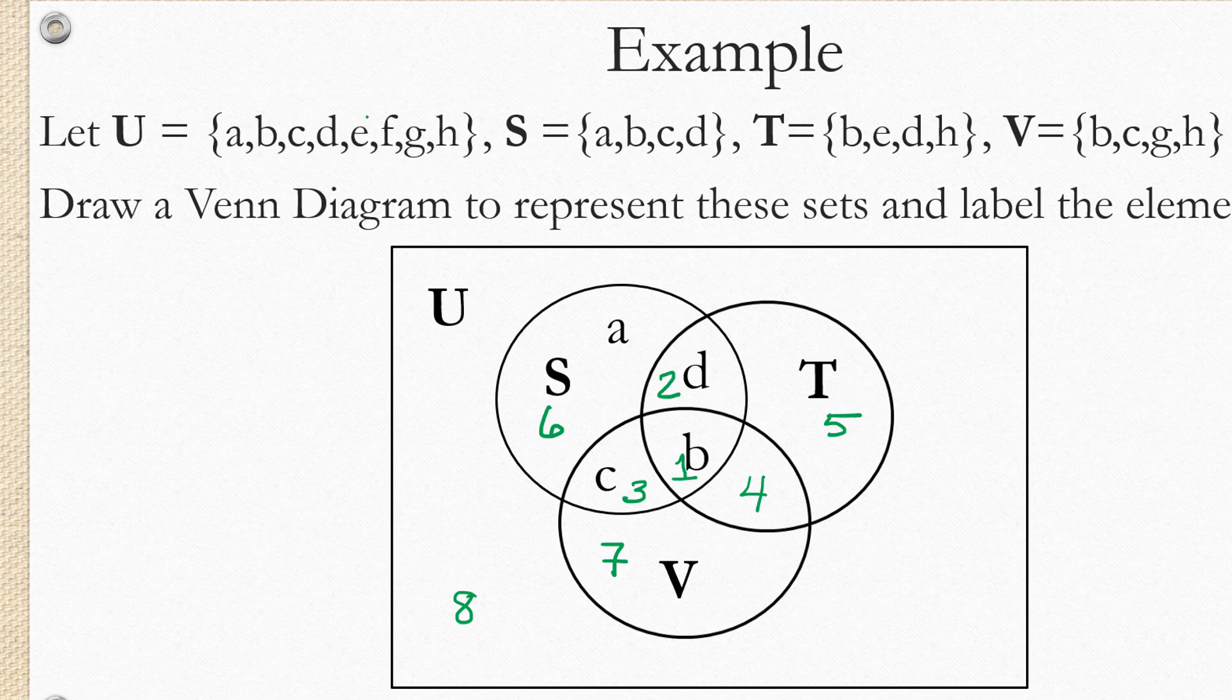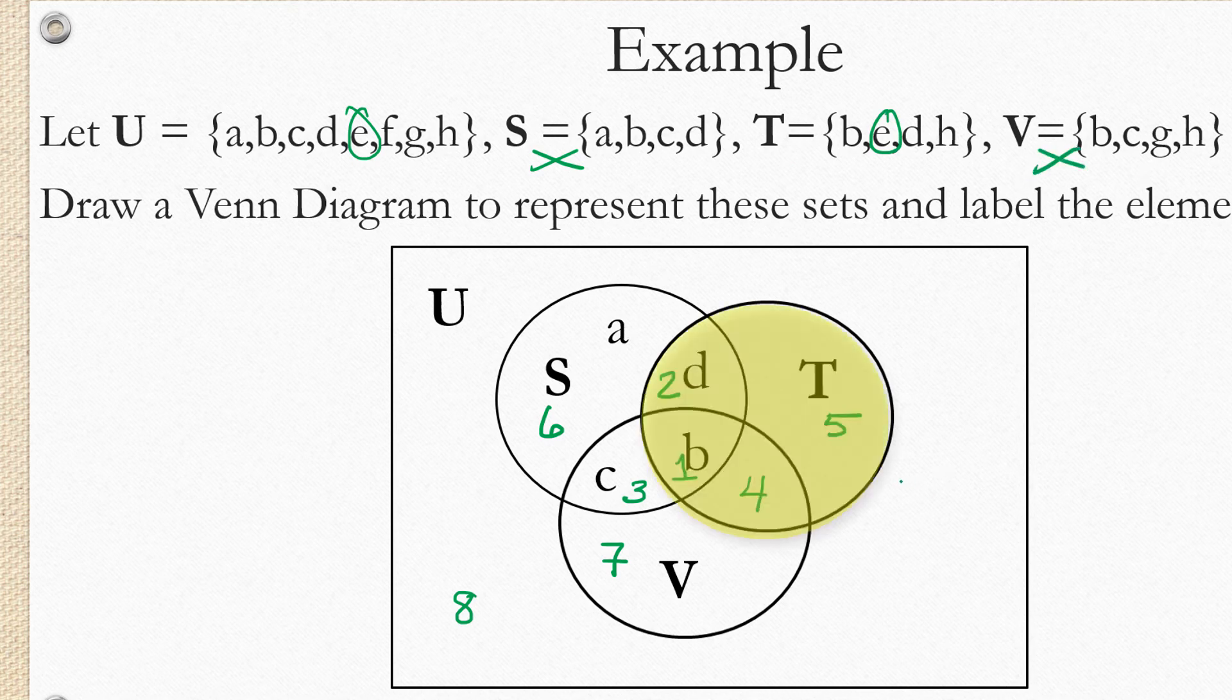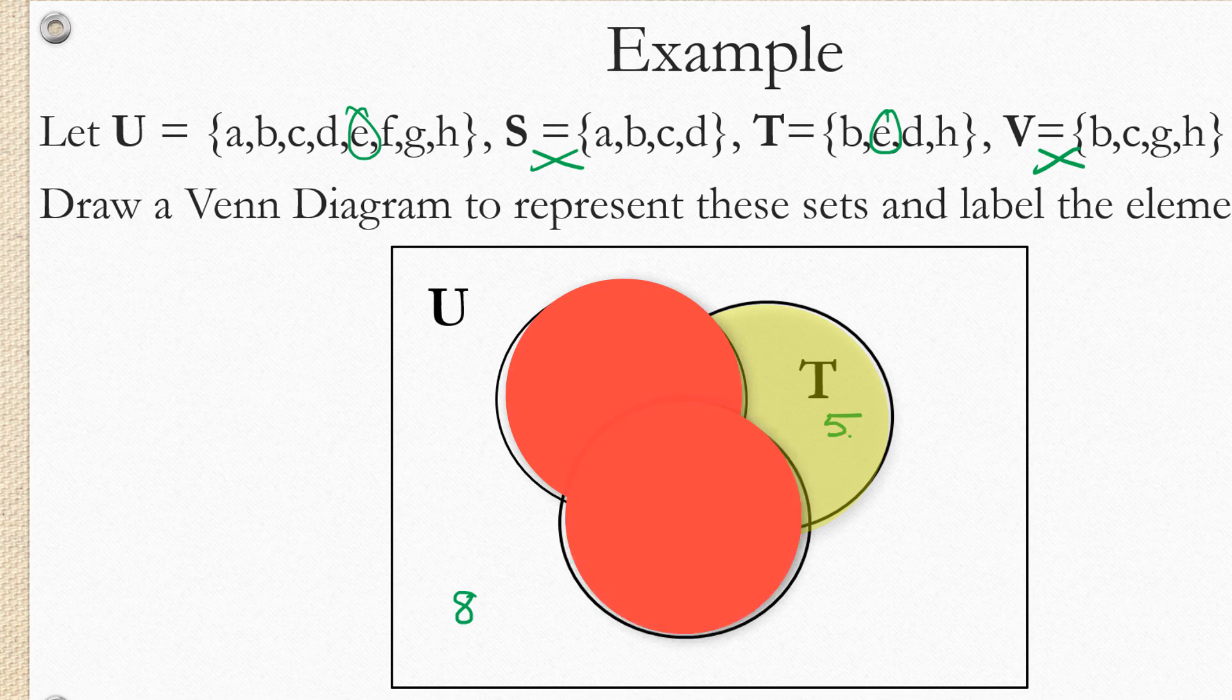Now element E. E is not in S. It is in T and it's not in V. So E is in that region of T that doesn't touch S or V, which is region five.